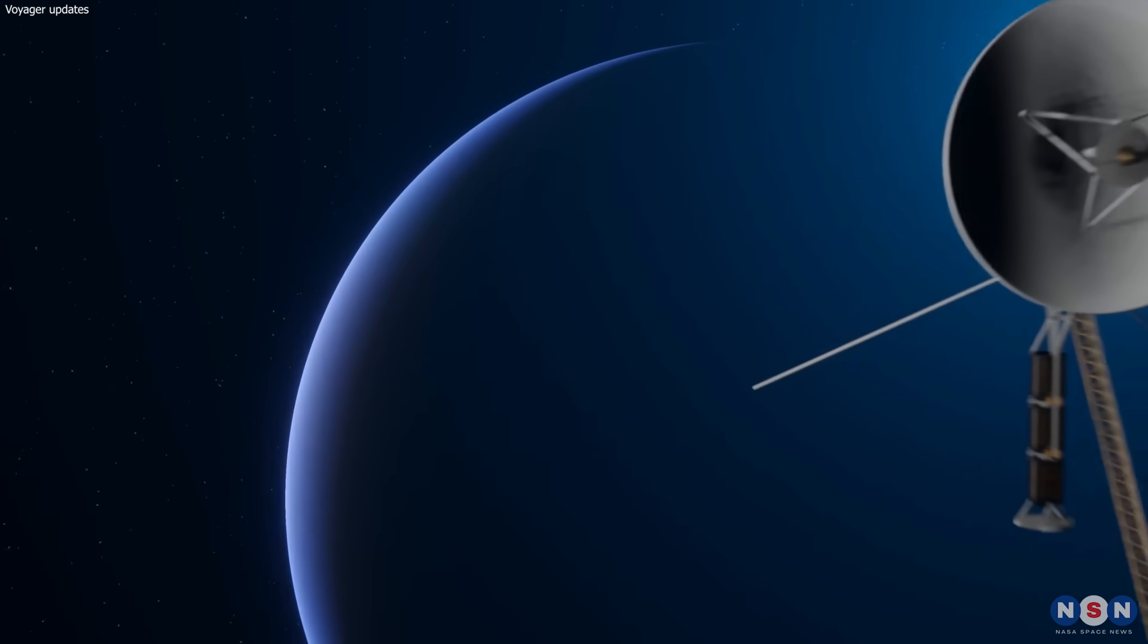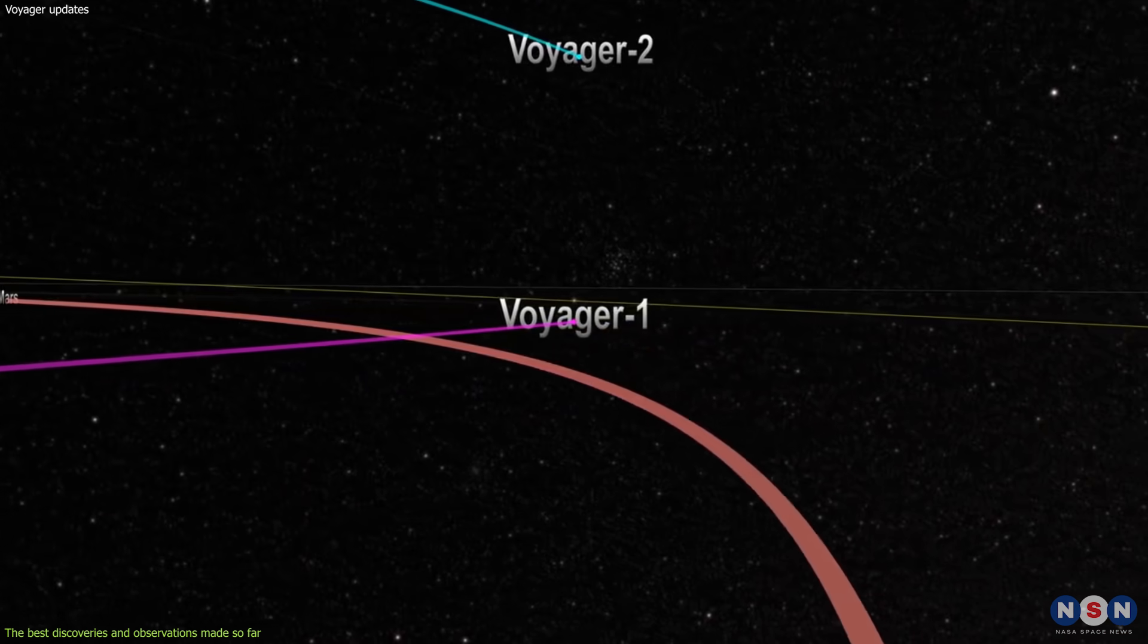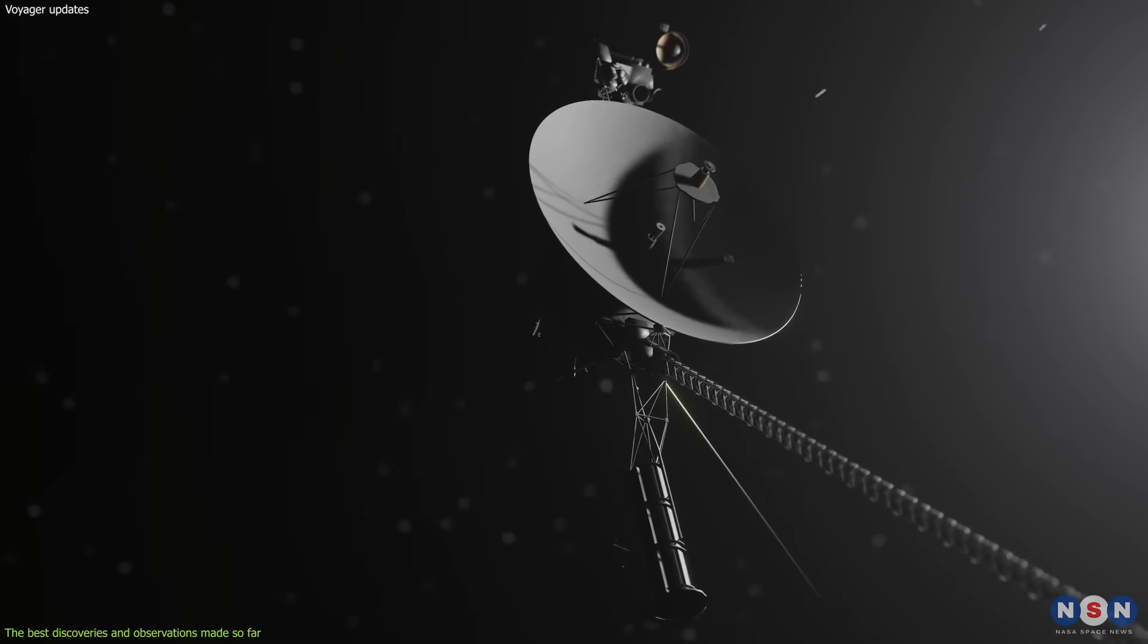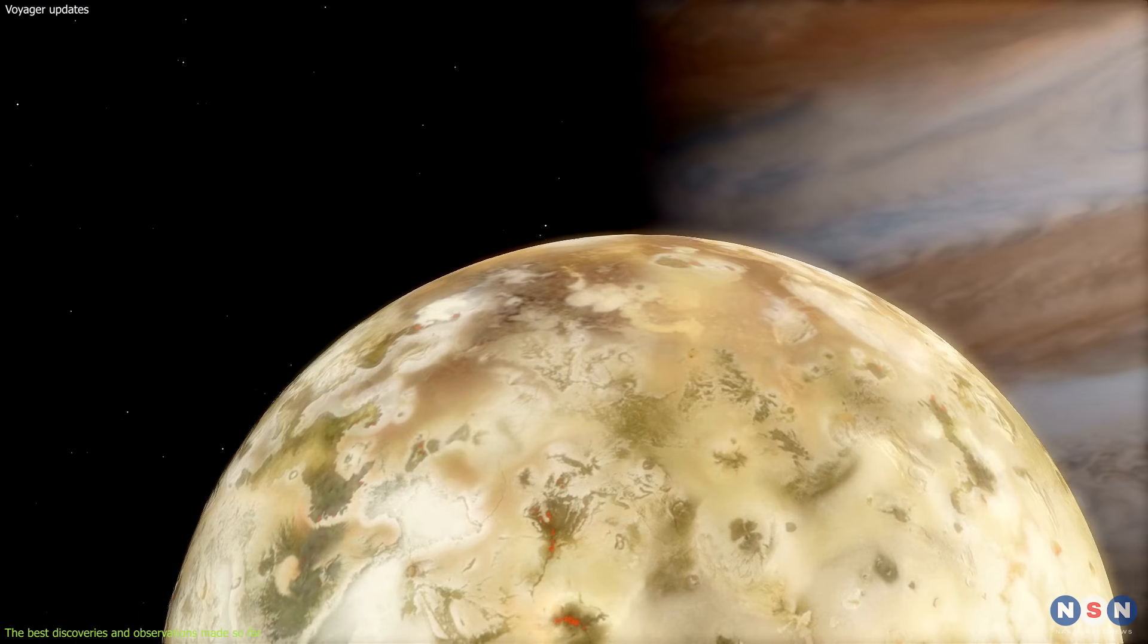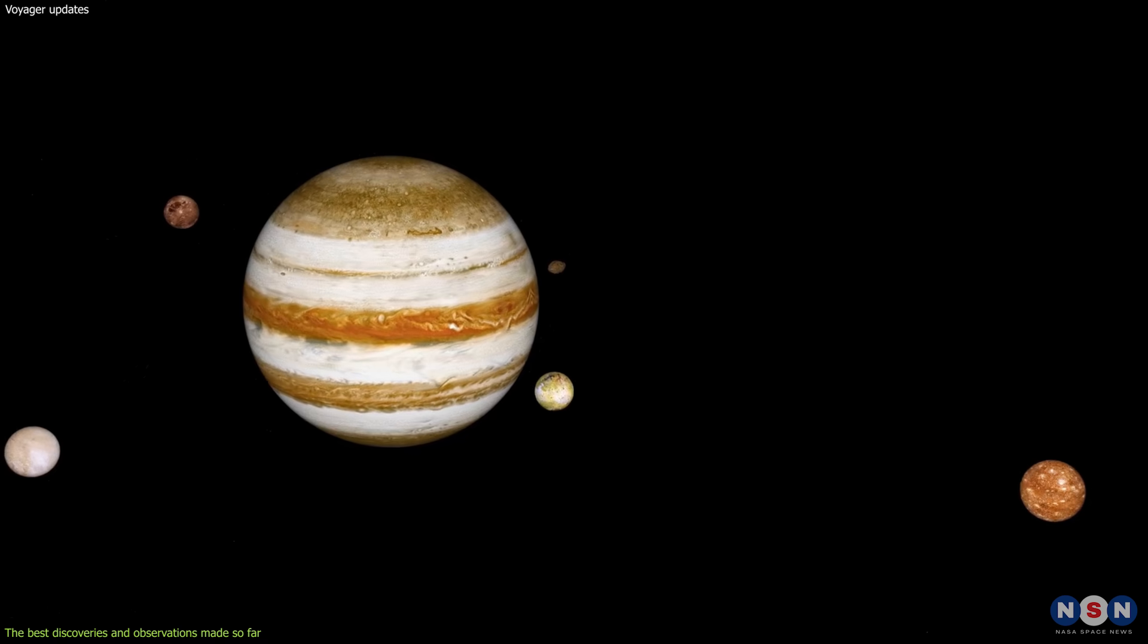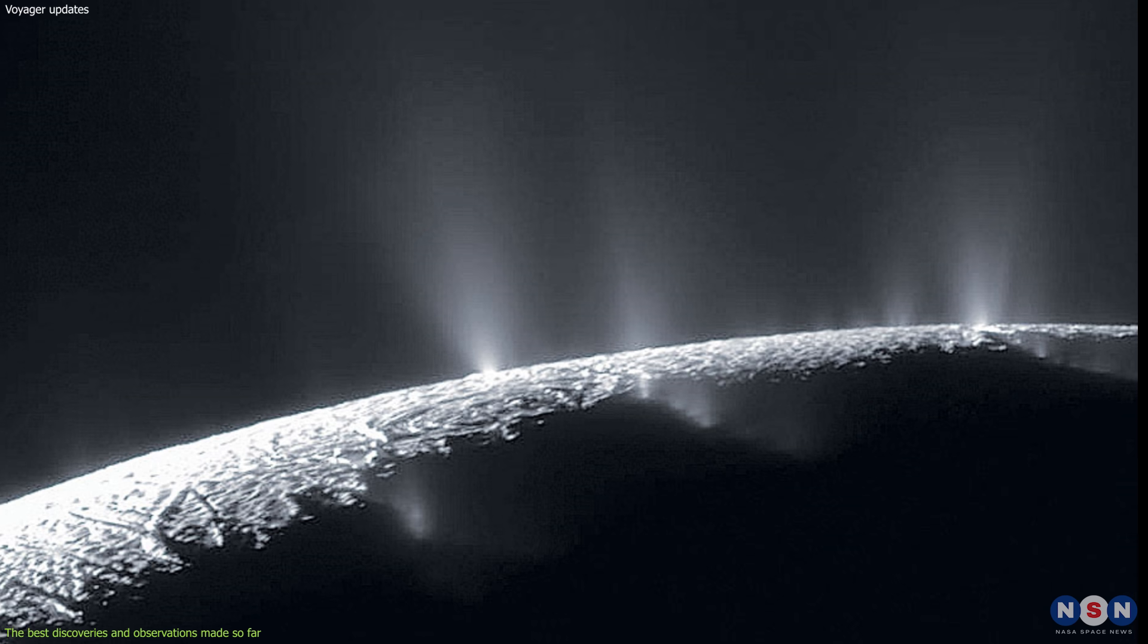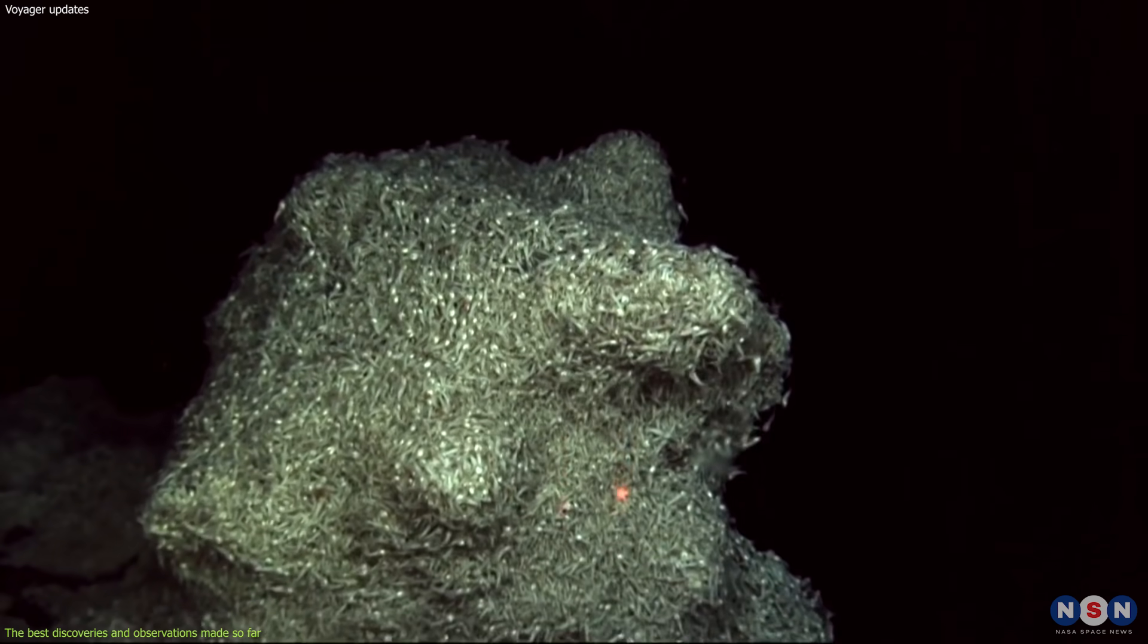Both spacecrafts have made many amazing discoveries and observations in their journey through the solar system and beyond. Some of the most significant ones are: they discovered 23 new moons around the outer planets, such as Io, Europa, Titan, and Triton. These moons have diverse and complex features, such as volcanoes, geysers, lakes, and oceans. Some of them may even harbor life.